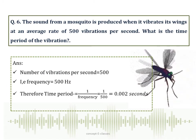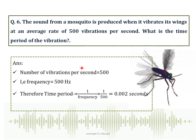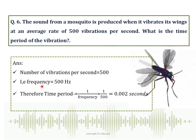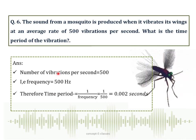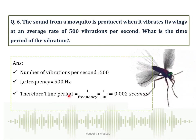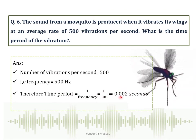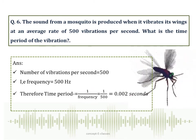Question number 6: The number of vibrations per second is equal to 500. Hence, frequency equals 500 hertz, since frequency is the number of vibrations or oscillations made by an object in 1 second. Time period equals 1 divided by frequency, which is 1 divided by 500, equal to 0.002 seconds. Hence, the time period of vibration is 0.002 seconds.